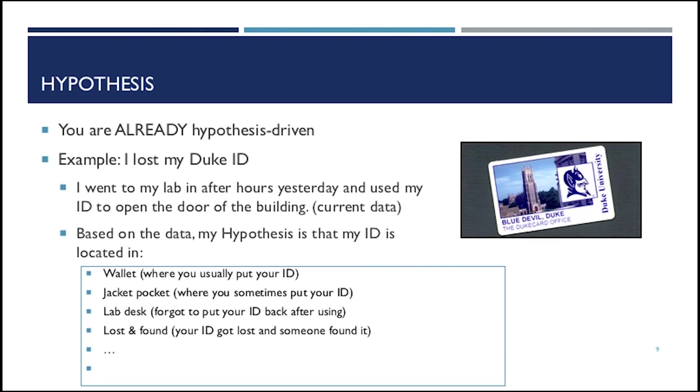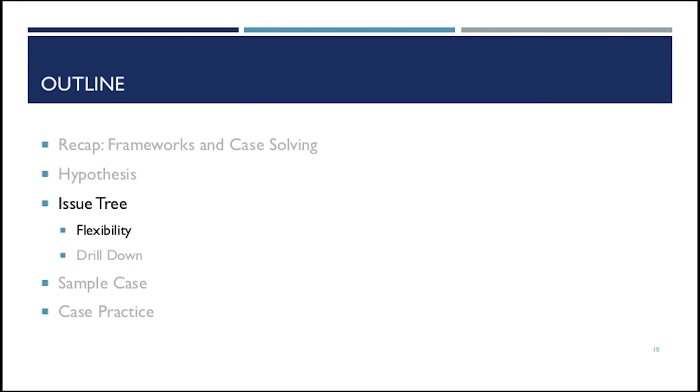And then you modify your hypothesis. My ID is in the jacket pocket, especially the one I wore yesterday. So this is the place where you sometimes put your ID in. And you see the dynamics here and you will check your lab desk and maybe lost and found. And it's all about probability. So you check the high probability places first and go to the next one if the first doesn't work. So it means that you always want to check high probability places and to neglect the low probability ones.